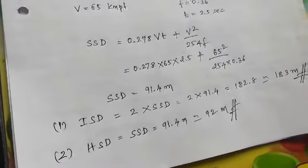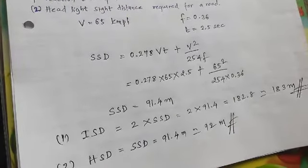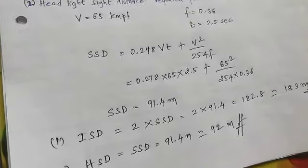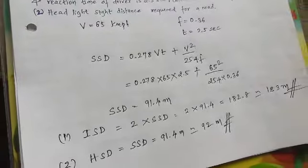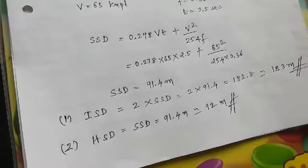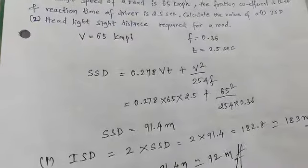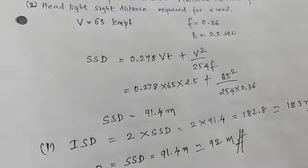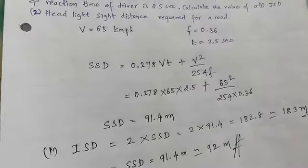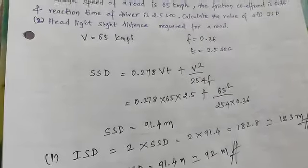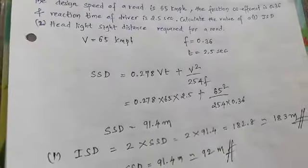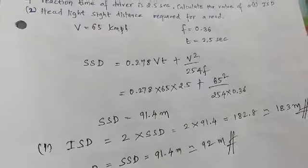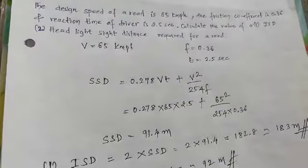So here we solved some problems. I can take one problem for assignment. Calculate the stopping sight distance of a road at ascending gradient of 3% for a design speed of 100 kmph. Assume the other data as per IRC recommendations. This is a problem you can solve as an assignment.